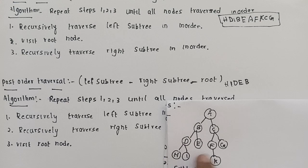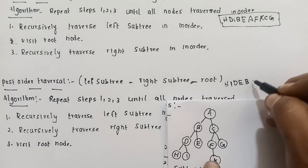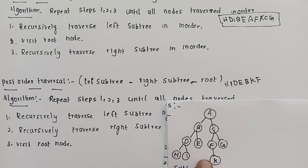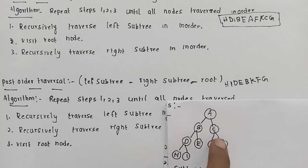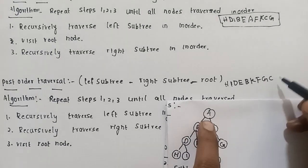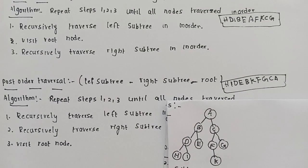Continuing post-order traversal: after completing A's left subtree, we move to A's right subtree rooted at C. For C's subtree: F has no left child, traverse F's right, then root F. Then G. Then root C. Finally, the root node A is visited last. This gives the complete sequence of nodes for post-order traversal of the given tree.